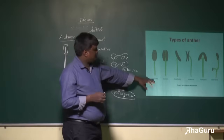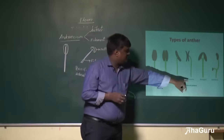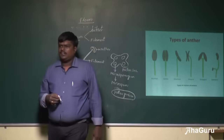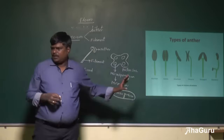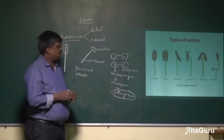The first four types — basifixed, adnate, dorsifixed, and versatile — are present in almost all angiosperms, whereas the divergent and other extreme types occur in very rare cases.